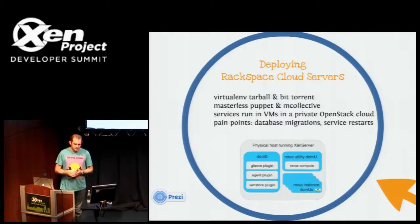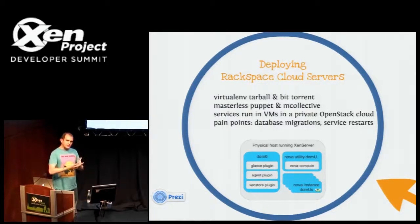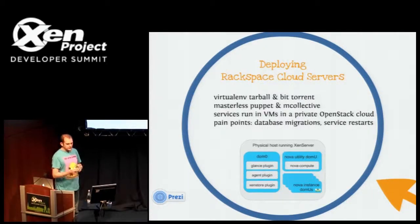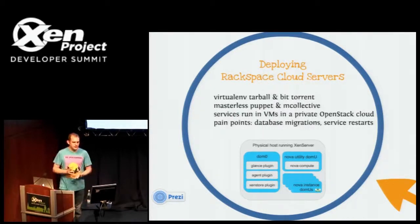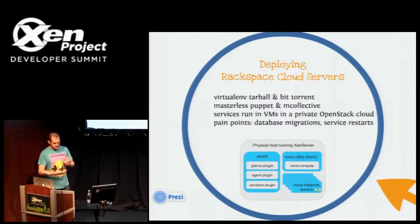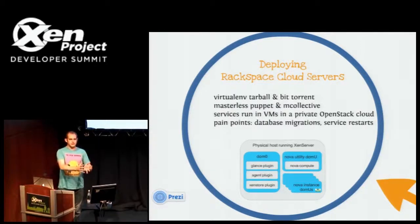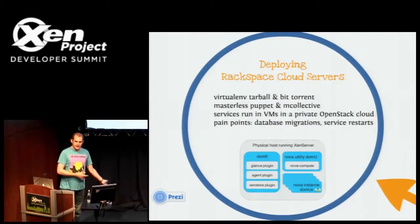We decided to rethink this. What the team has done is: we have a pre-production environment to test everything, and we deploy a Python virtual environment that contains all the Python code to run OpenStack and all its dependencies. We know the Python code we can rev quite quickly, and that's contained in a tarball. We actually use BitTorrent to push out this tarball to all the different machines. At that point we can have a directory with the old code, a directory with the new code, and the ability to switch symlinks between those.